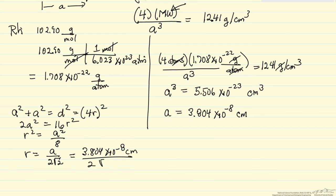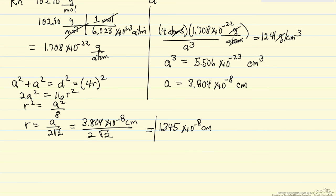This is 3.804 times 10 to the minus 8 centimeters, and I'm going to divide that by 2 times the square root of 2. And so we calculate the radius, 1.345 times 10 to the minus 8 centimeters.